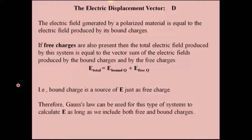The electric field generated by polarized material is equal to the electric field produced by its bound charges. If free charges are present, then the total electric field produced is equal to the vector sum of the E fields produced by the bound charge. So here's E total, here's the bound charge, and here's the free charge E's.